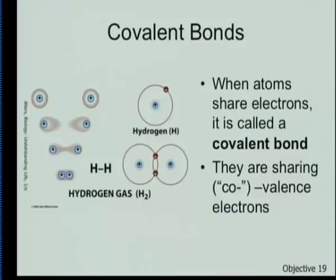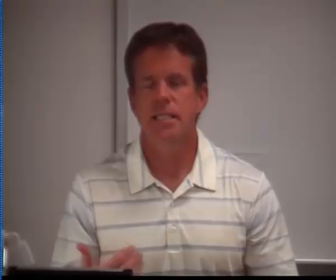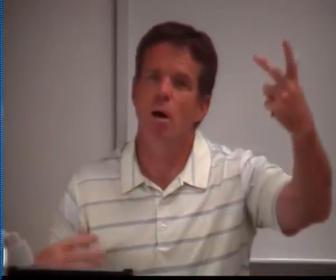One of the most important bonds we're going to deal with is the covalent bond. We're going to talk a lot about organic chemistry and biochemistry and how they function in our bodies. A big part of that is the element carbon. Carbon is in group four, so it has four electrons in its outer shell, which gives it a lot of versatility — it can bond with many different atoms.